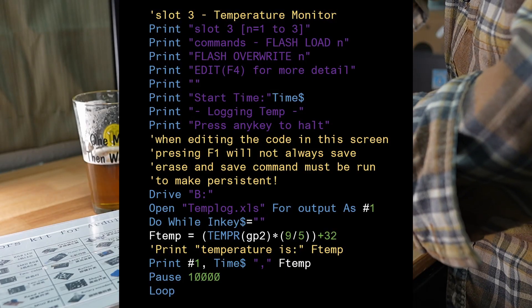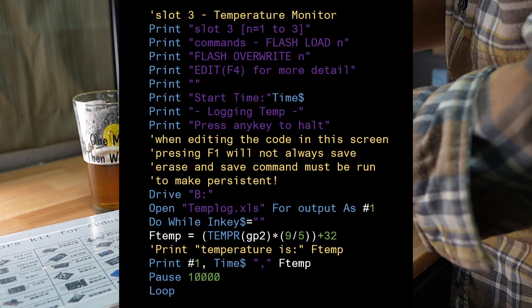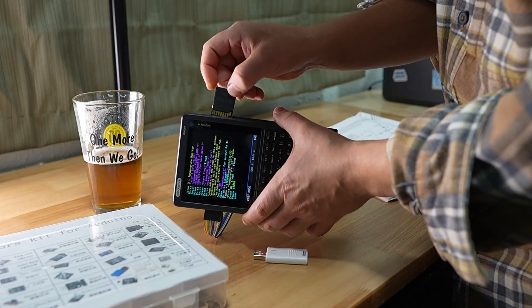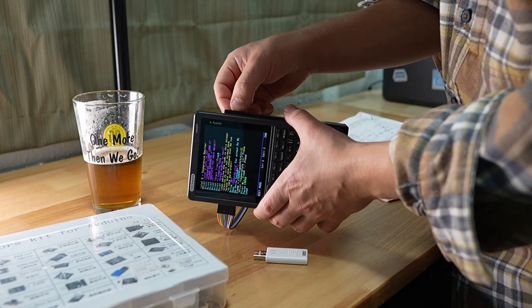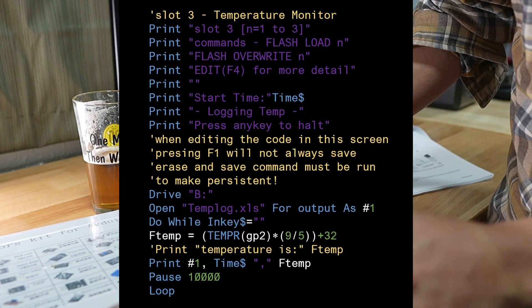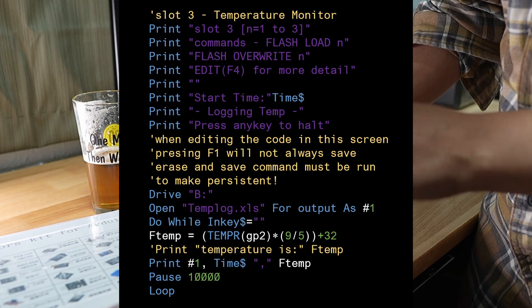The first thing I do is set the directory with the drive command to drive B, which if you have the stock firmware on the PicoCalc, is the drive letter for the SD card that sits in the side of the device. I then took that, converted to Fahrenheit, and then the Fahrenheit variable is what I put in the XLS file.